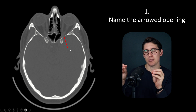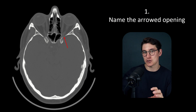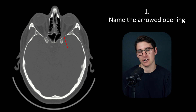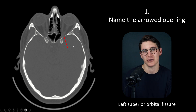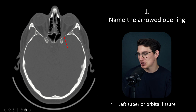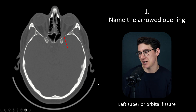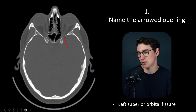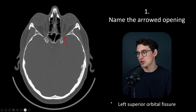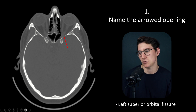Now there are actually only three openings at the posterior aspect of the orbit: the superior orbital fissure, the optic canal, and the inferior orbital fissure. What we're dealing with here is the left superior orbital fissure. I'm going to harp on about this throughout this course — when you can lateralize anatomy, be sure to do so. If you can say whether something's on the left or right-hand side of the patient, include it in your answer. Most anatomy exams will mark you down if you leave that out.